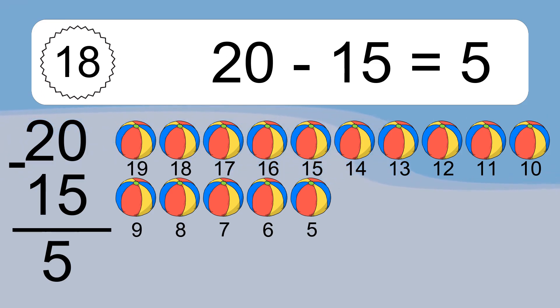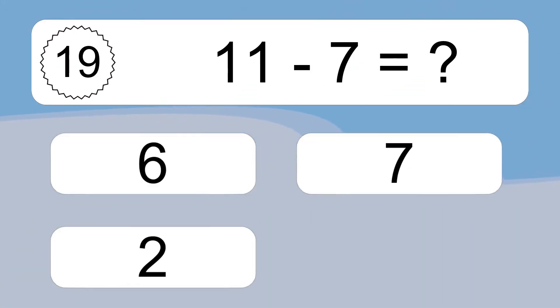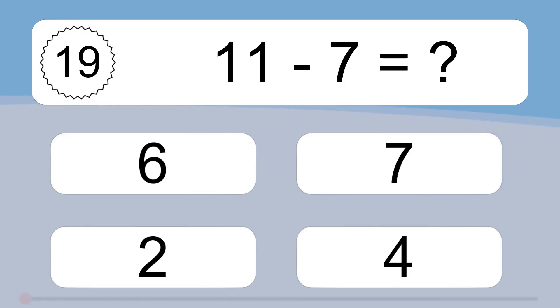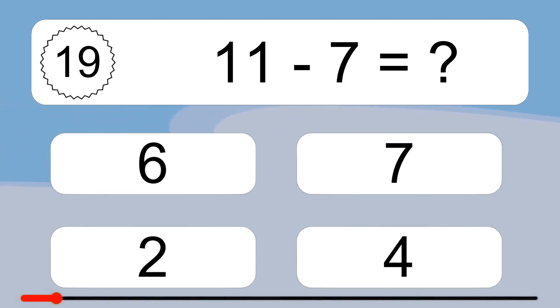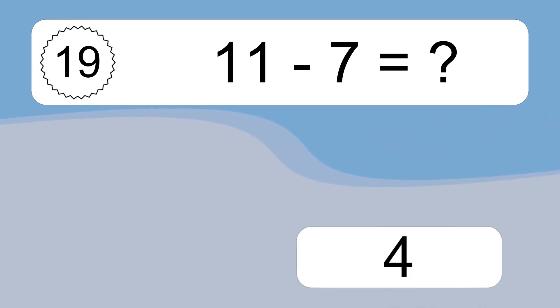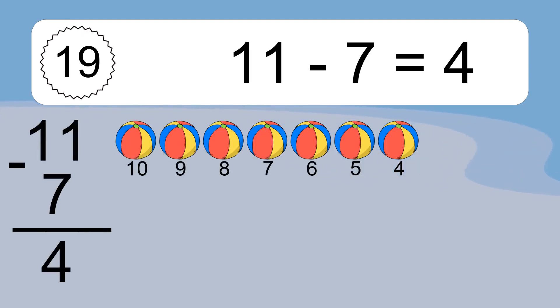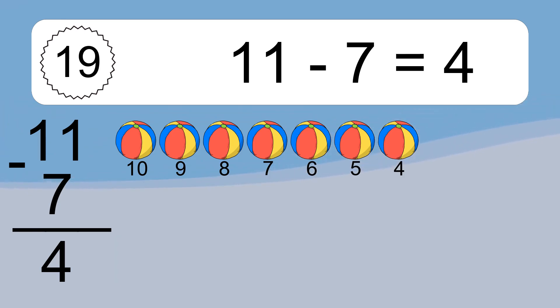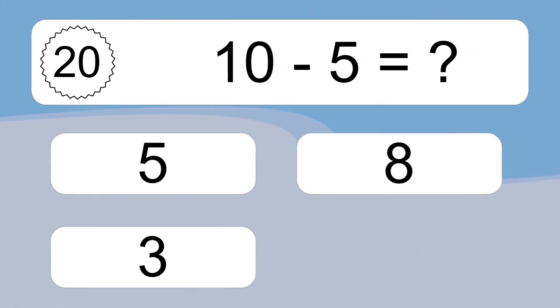7, 6, 5. 11 minus 7 equals what? 11 minus 7 equals 4. Let's count it: 10, 9, 8, 7, 6, 5, 4.